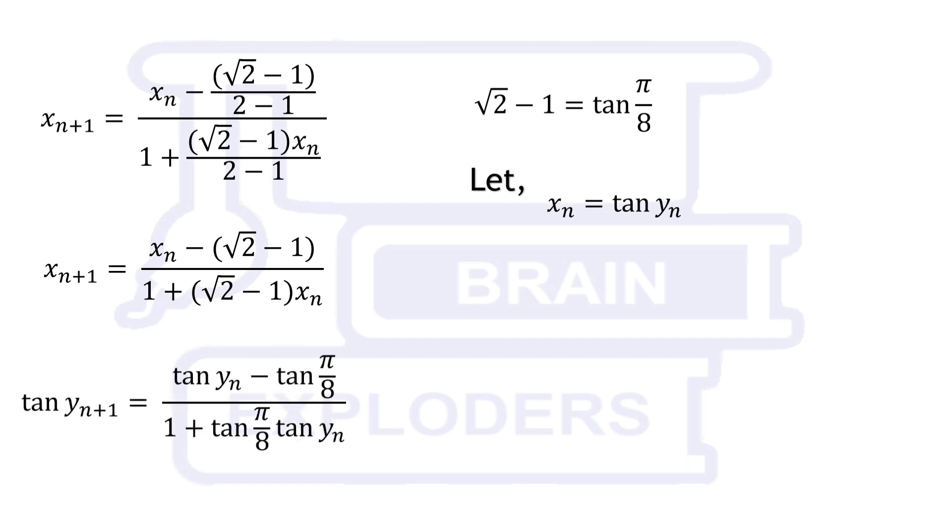On substituting both of these, we get tan yn plus 1 equals tan yn minus tan pi by 8 over 1 plus tan yn times tan pi by 8. It can be written as tan of yn minus pi by 8, which gives us a very helpful relation: yn plus 1 equals yn minus pi by 8.